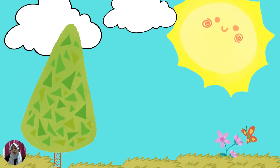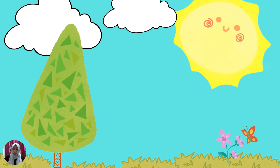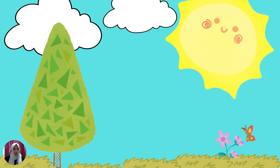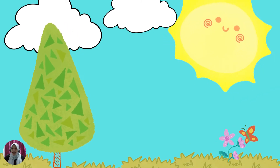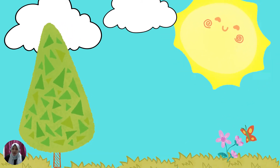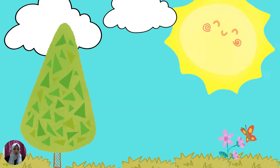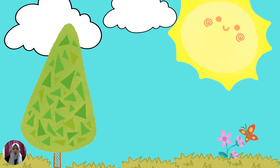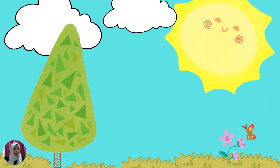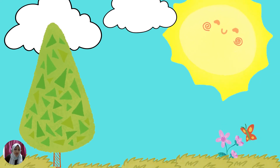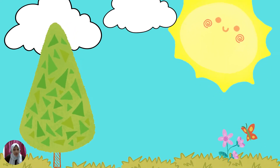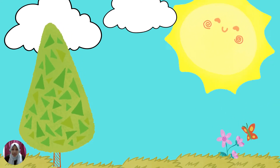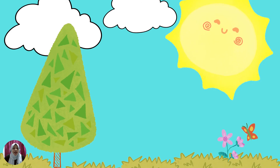Let us now look at this beautiful view here. Can you see? Yes, we can see the tree, the sun, clouds, butterfly and flower, and also the grass. Why can we see here? We can see here because there is light. If there is no light here, can we see all these things? Of course, we cannot.